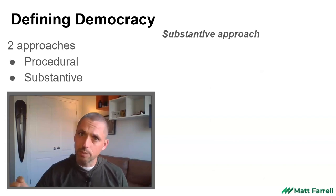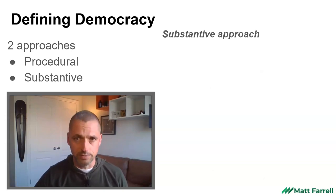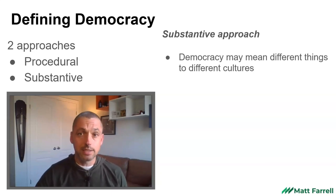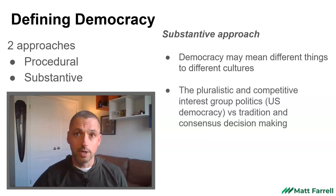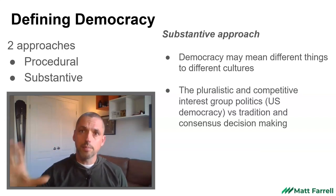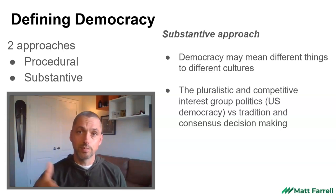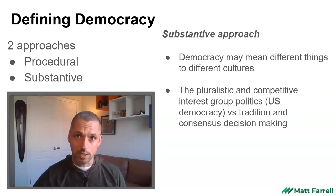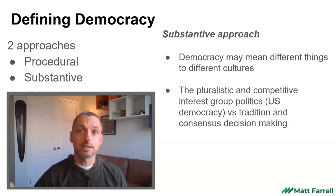An alternative approach that might do a bit better than the procedural approach is what's called the substantive approach, which looks at the substance of democracy. This can be challenging because democracy means different things in different parts of the world. You look at American democracy with all the interest groups and the huge amounts of money spent on it — that might look very different from traditional societies that prefer a more consensus-based, localized decision making. Both of those could be different types of democracy and both could technically be considered democracies in a substantive sense.